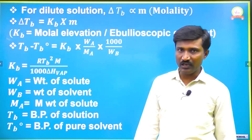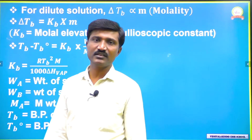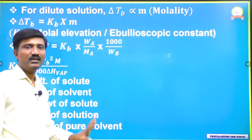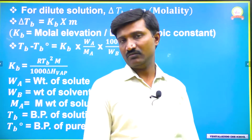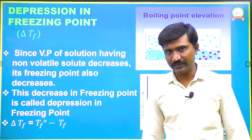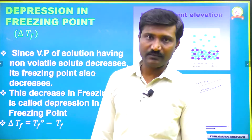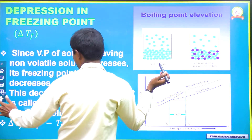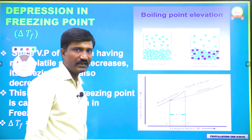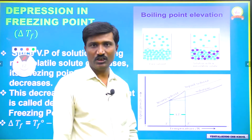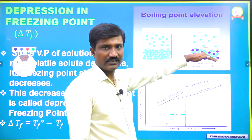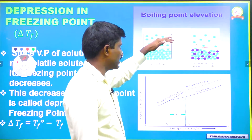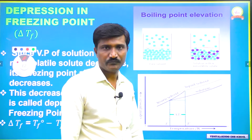So the equation for calculating the molar mass of solute using elevation in boiling point shows that molar mass of solute is inversely proportional to elevation in boiling point. Now let us see the third colligative property — depression in freezing point. Using the same example as before: this is pure solvent and this is solution. In the solution, solute and solvent both are present but only solvent molecules undergo vaporization. Vapor pressure of the solution is less; pure solvent vapor pressure is more.